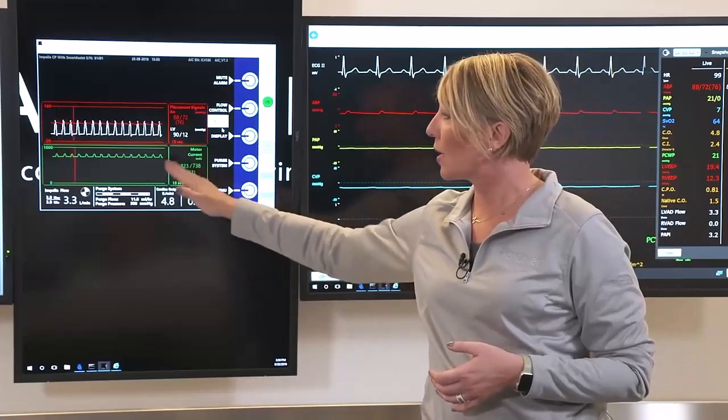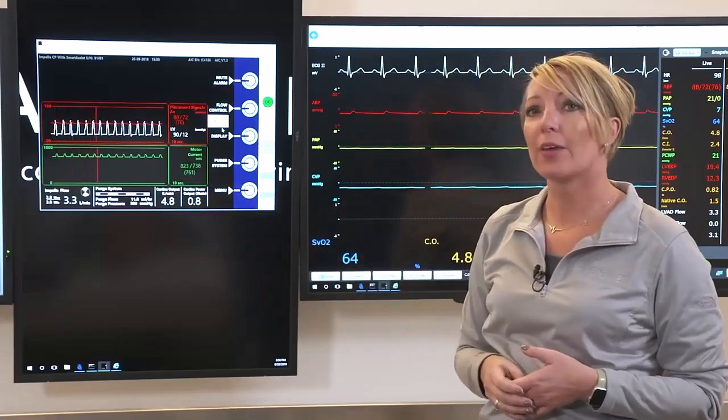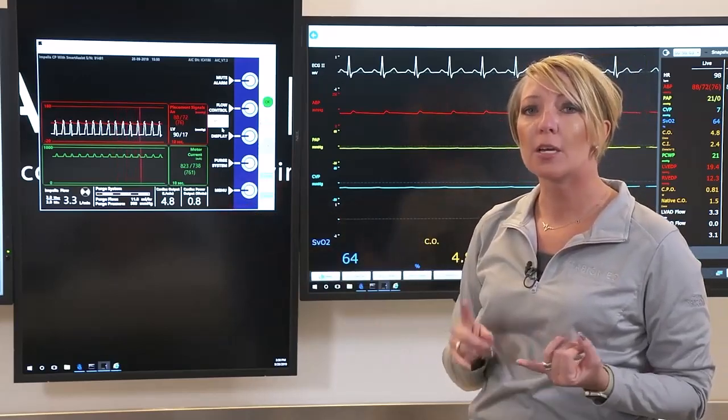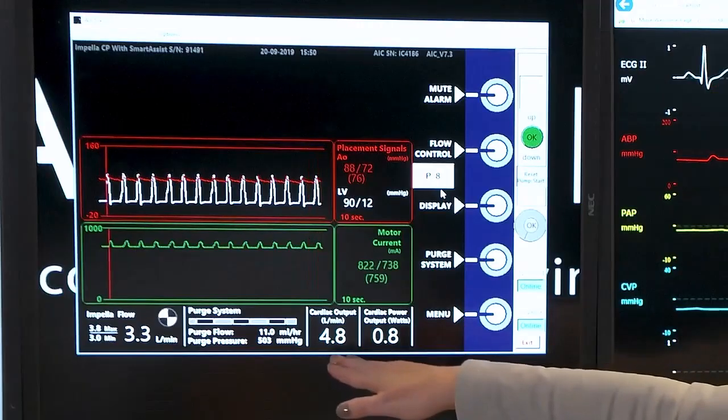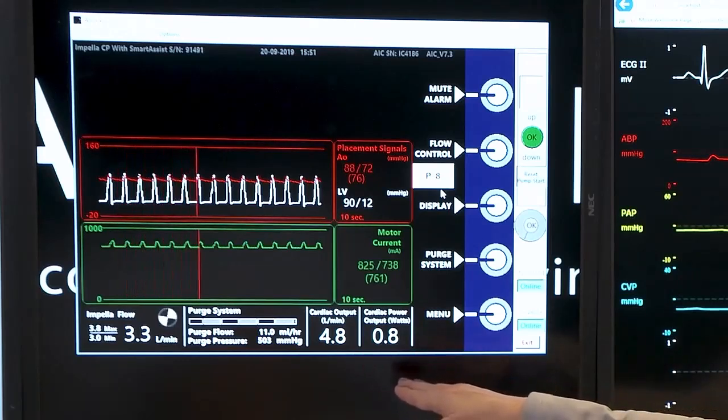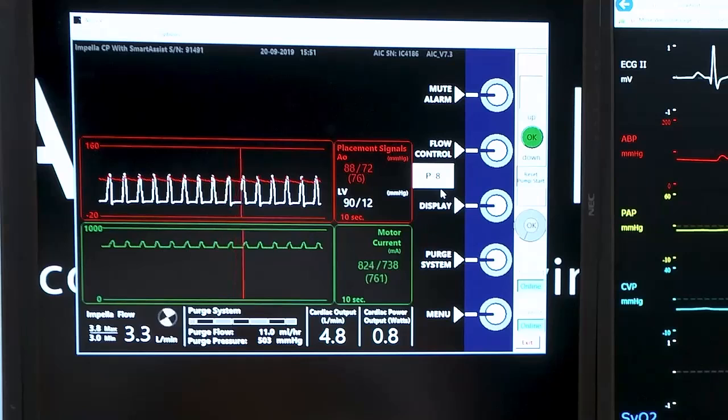And then you'll see that on the far right hand of that common screen, we will have the additional metrics. So that's going to be inputting the cardiac output, and then the AIC will automatically calculate the CPO to allow for trending of that CPO.